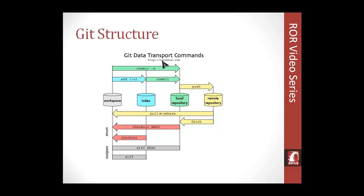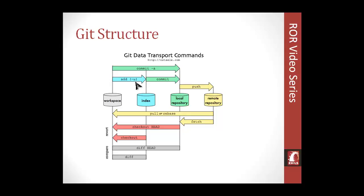Here's a graphic from osteele.com that depicts the workflow and data flow of using Git. We have our workspace, which is our local machine, and then the remote repository, which is Heroku or GitHub or whatever service you use. We also have the index, which is the staging area between the workspace and the local repository. You do 'git add' to add files to the staging area or index, and you keep doing adds for all the files you're working on. Then you do the commit command, which sends everything to the local repository on your machine.